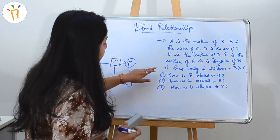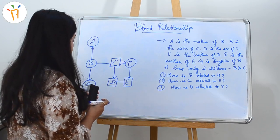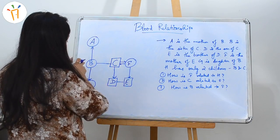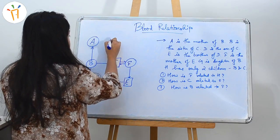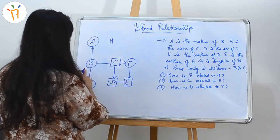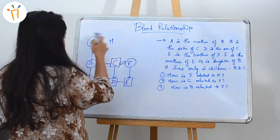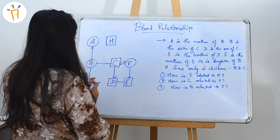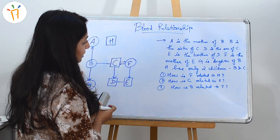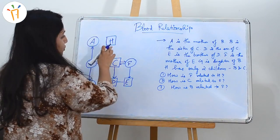Now, it says H has only two children, B and C. We have B here, and we have C here. We know that A is the mother of B, and H has only two children, B and C. B and C are here, and we can write H here. Since A is the mother, H will be the father to have two kids — B and C. Since A has a daughter B, as initially told in the first line, H is the father.